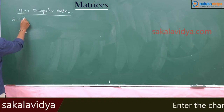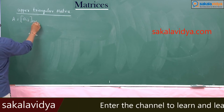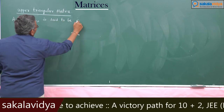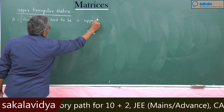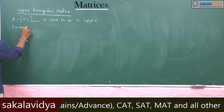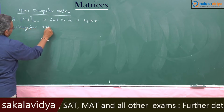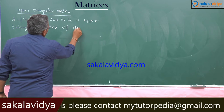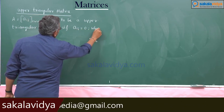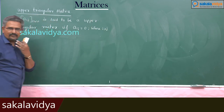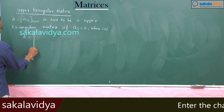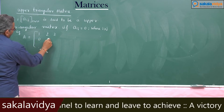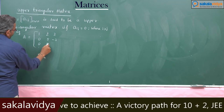A = [aij] (n by n) is said to be an upper triangular matrix if Aij is equal to 0 where i is greater than j. For example, consider the matrix [1, 2, 3; 0, 5, -3; 0, 0, 2].